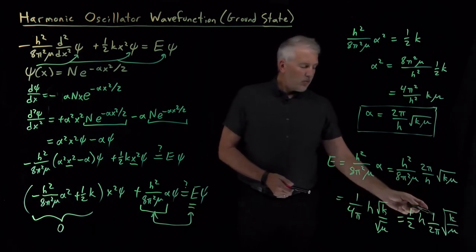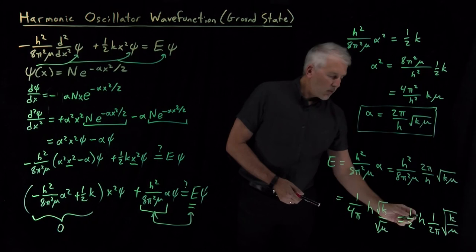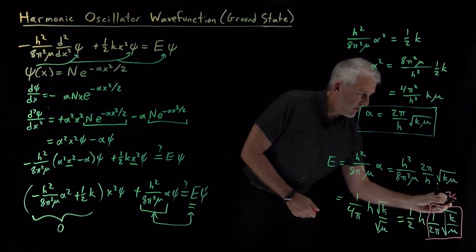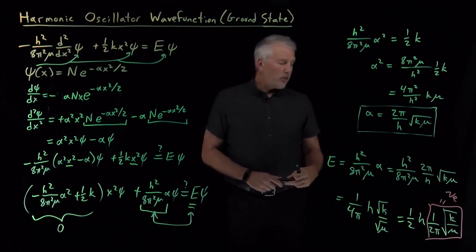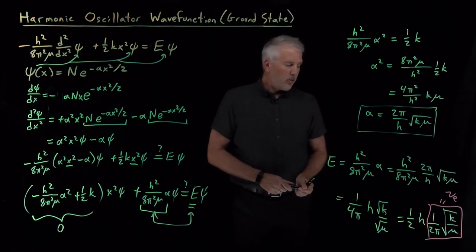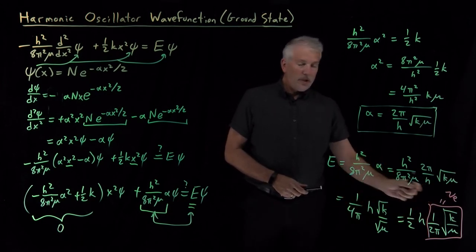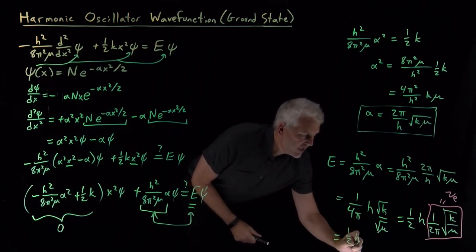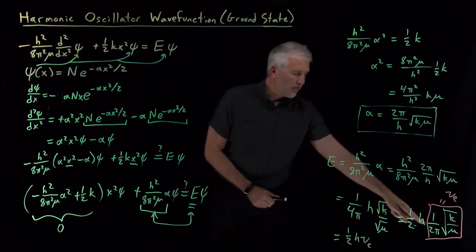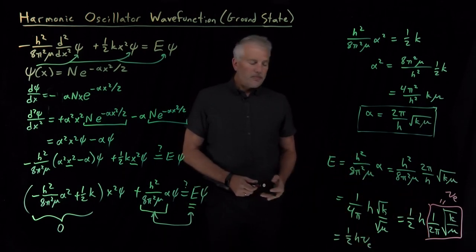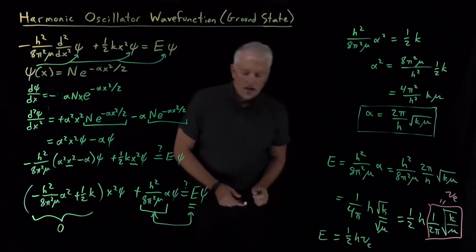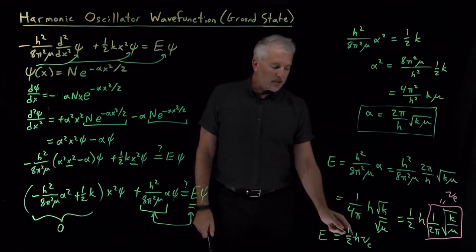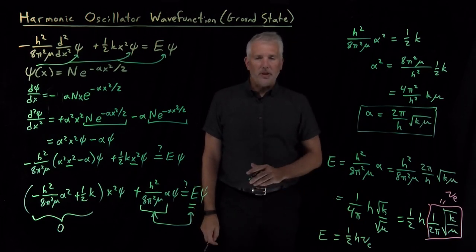That should look familiar: 1 over 2 pi times the square root of k over mu is what we called for the classical harmonic oscillator the equilibrium vibrational frequency — the frequency with which this harmonic oscillator vibrates. So we can write the energy as one-half times h times nu. The energy of this wave function, when alpha takes on this particular value, is one-half times Planck's constant times the vibrational frequency of that same oscillator.